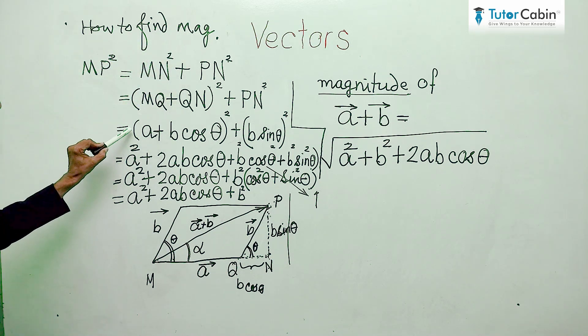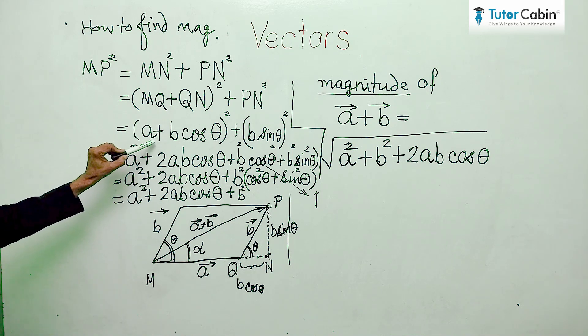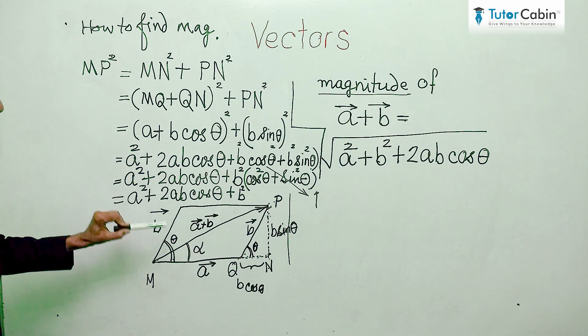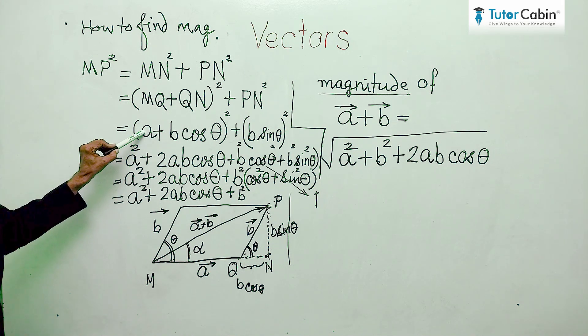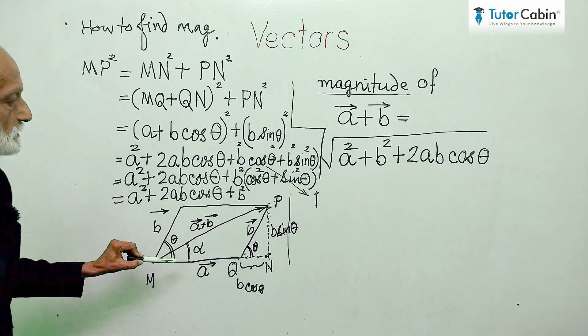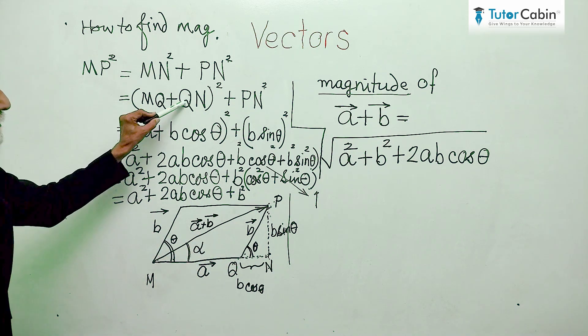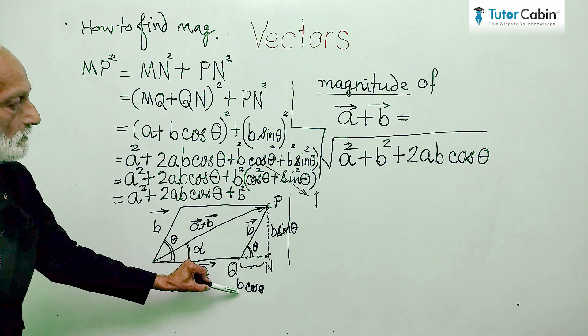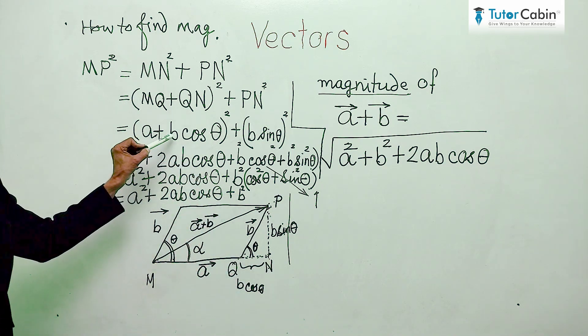Now, for magnitude, we will simply take the scalar value of A, that is A without any arrow. So, MQ is A, QN is b cos theta - we had already found out.